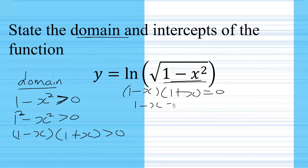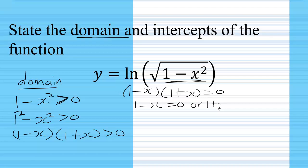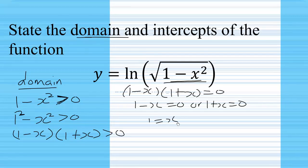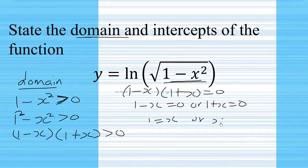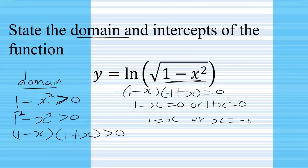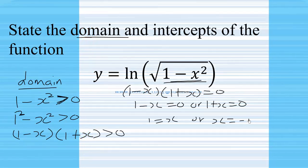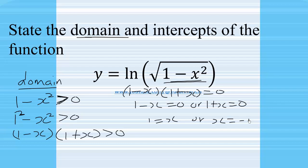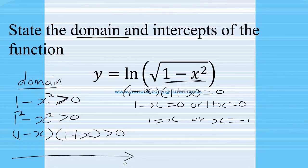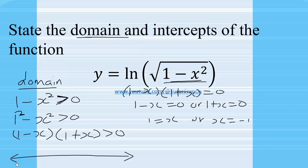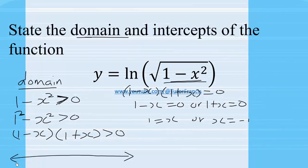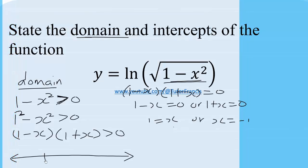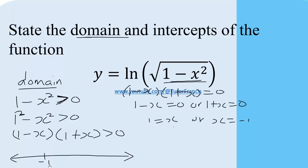Either 1 minus x equals 0 or 1 plus x equals 0, giving us x equals 1 or x equals negative 1. So x equals positive 1 or negative 1. We can now solve the quadratic inequality by drawing the real number line and indicating x equals 1 and x equals negative 1.